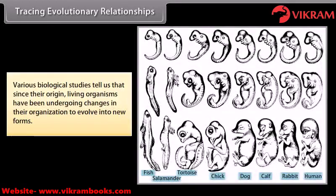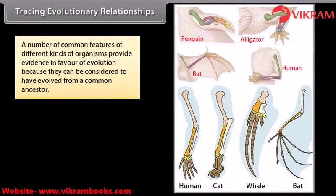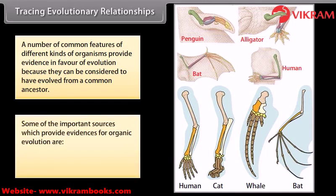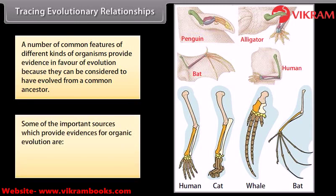Various biological studies tell us that since their origin, living organisms have been undergoing changes in their organization to evolve into new forms. A number of common features of different kinds of organisms provide evidence in favor of evolution, as they can be considered to have evolved from a common ancestor. Important sources of evidence include homologous organs and analogous organs.